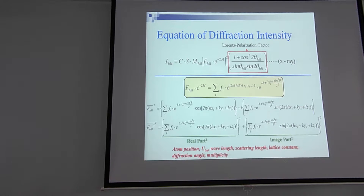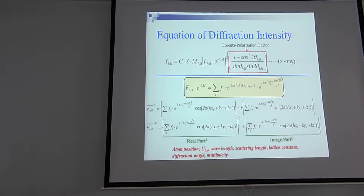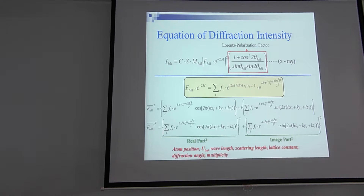I need to add one more thing — we will add one more parameter called ZERO, which means the shift of the X-ray machine. When you put in the sample it's not exactly at the center of the optical axis — it may be a little bit higher or a little bit lower — and that would cause an angle shift. So we need to add one more parameter, ZERO. That is all we need.